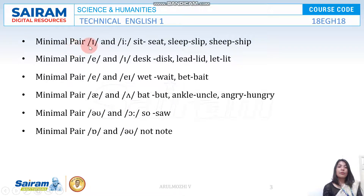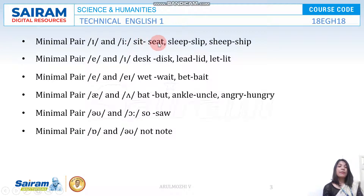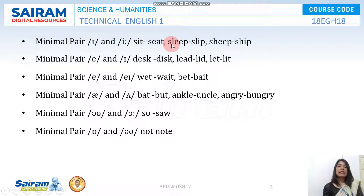Minimal pair number one: only the I and E sounds are differing; the other sounds must be the same. Take for example 'sit' and 'seat.' Here the first sound is S and the last sound is T — you have three sounds: S, I, T and S, EE, T. The first and last sounds are same; only the middle sound is differing. So 'sit' and 'seat' is a minimal pair. Similarly, 'sleep' and 'slip' — again one sound is differing, that is EE and I; the others are the same.